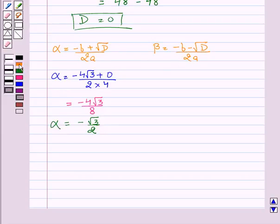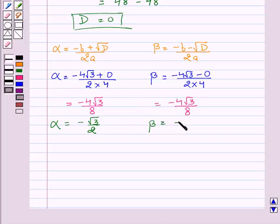Similarly for β, we see β = (-4√3 - 0)/(2×4). This gives β = -4√3/8, which implies β = -√3/2.